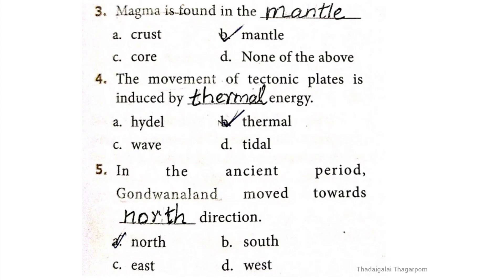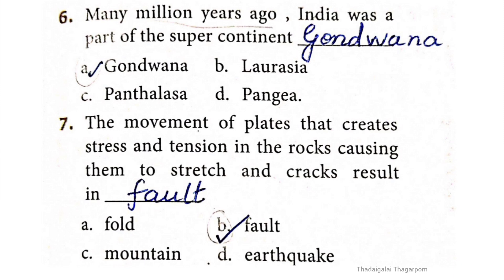Fifth one: in the ancient period, Gondwana Land moved towards which direction? The correct answer is option A: North direction. Sixth one: many million years ago, India was a part of the super continent. The correct answer is option A: Gondwana. Seventh one: the movement of plates that creates stress and tension in rocks causing them to stretch and crack results in the correct answer option B: Fault.